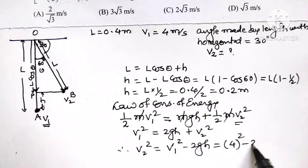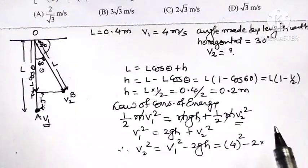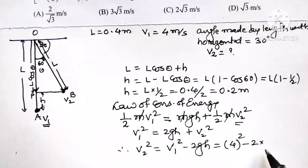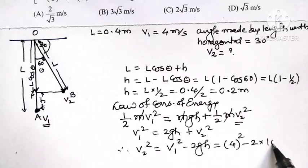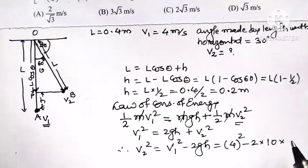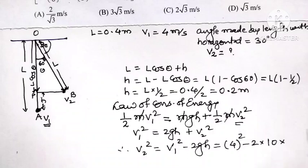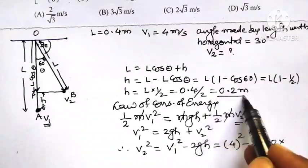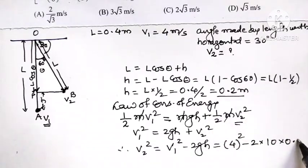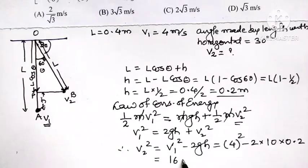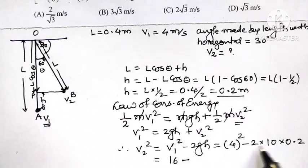Value of V1, the maximum velocity, was given as 4. So 4 square minus 2 times G. G is given as 10, and height H is 0.2. This is equal to 4 square means 16 minus 2 into 0.2, 0.4 into 10, means it is 4.